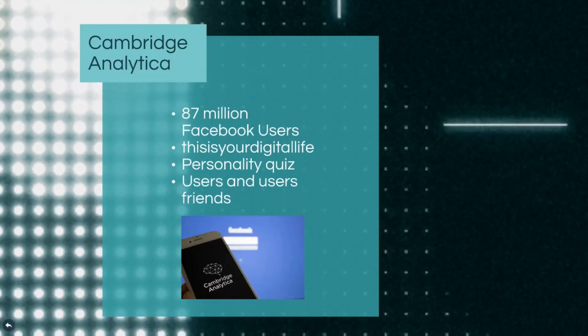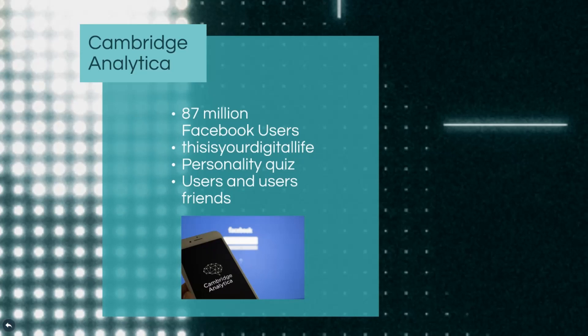A significant example demonstrating the importance of the digital footprint involves Facebook and a company called Cambridge Analytica. Via an app for a personality quiz, the company was able to obtain information on not only the individuals taking the quiz, but all their friends and associates too. In the process, Cambridge Analytica was able to collect the data of about 87 million Facebook users.